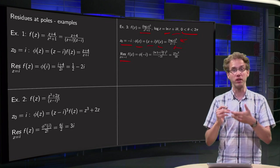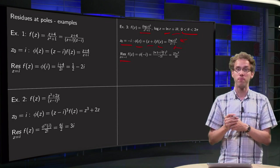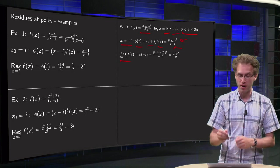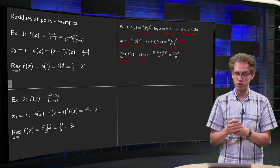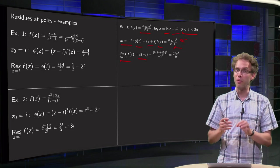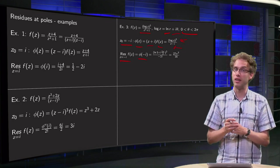It's a first order pole, so we can just plug in minus i in phi. Then, we have to divide by 0 factorial, which is just 1, so we don't see it. We have to be a bit careful with plugging in the minus i.